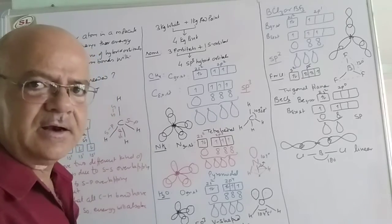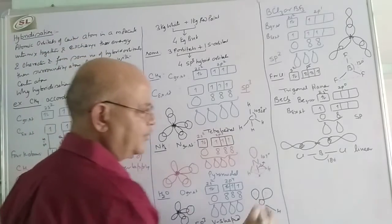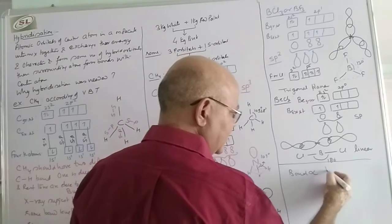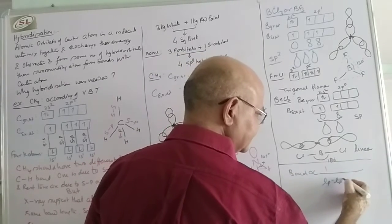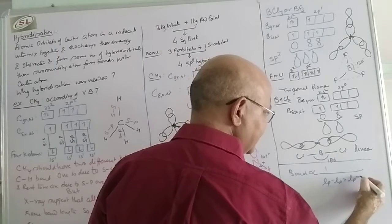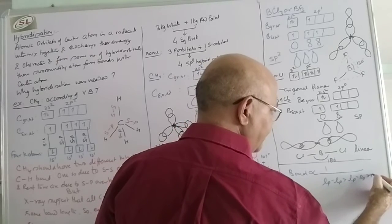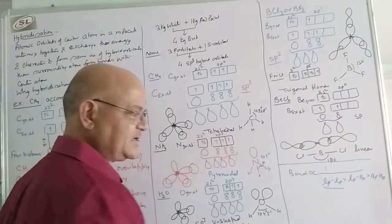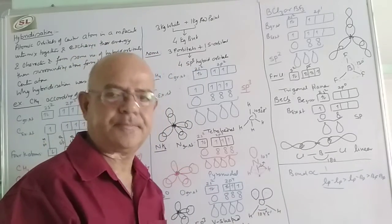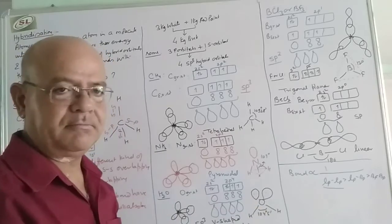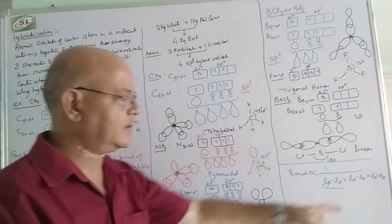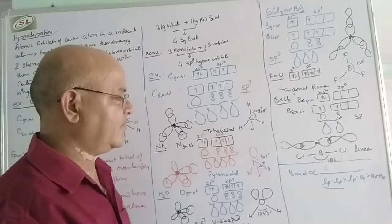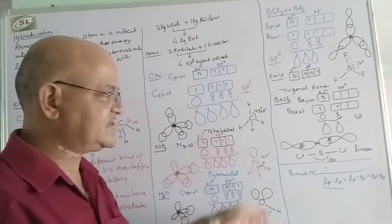The trend in bond angles across methane, ammonia, and water is due to lone pair–lone pair repulsion, lone pair–bond pair repulsion, and bond pair–bond pair repulsion. In water, lone pair–bond pair repulsion is dominant due to the presence of 2 lone pairs, so the bond angle is minimal. In methane, only bond pair–bond pair repulsion operates, so the bond angle is highest among the three.